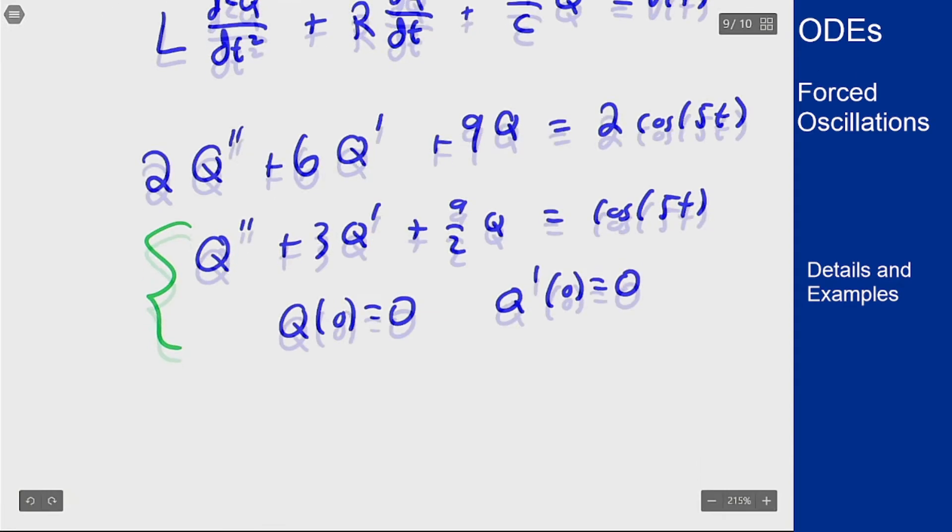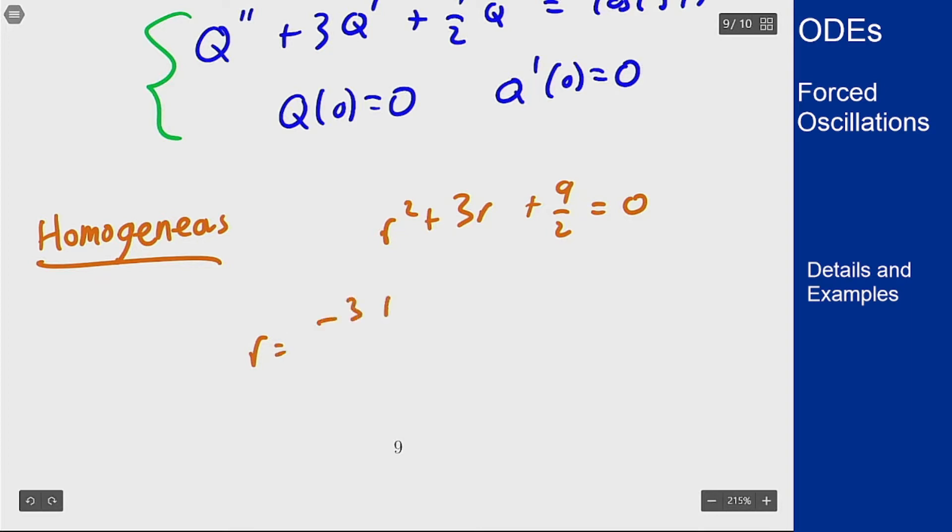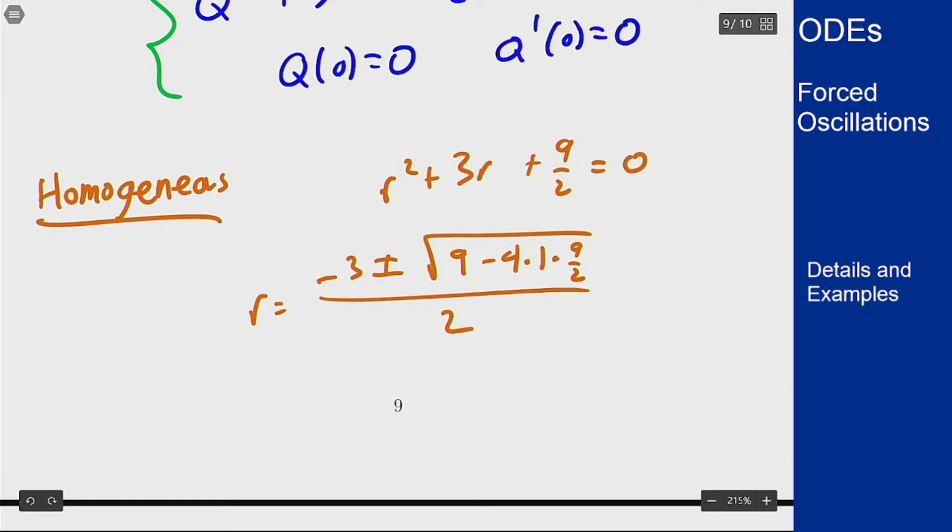First we solve the homogeneous part which has characteristic equation r squared plus 3r plus 9/2 equals 0. We can work this out using the quadratic formula. r should be negative 3 plus or minus the square root of 3 squared is 9 minus 4 times a times c over 2. 4 times 9/2 gives me 18. 9 minus 18 is negative 9. So I will see roots of negative 3 plus or minus square root of negative 9 over 2, or negative 3/2 plus or minus 3/2 i.